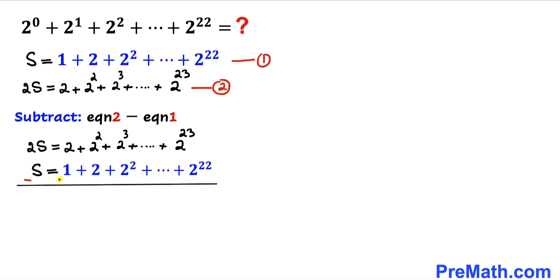So I'm going to put a minus sign over here and I'm going to change all the signs from positive to negative across the board. So therefore on the left hand side 2S minus S is going to give us simply 1S equals to...